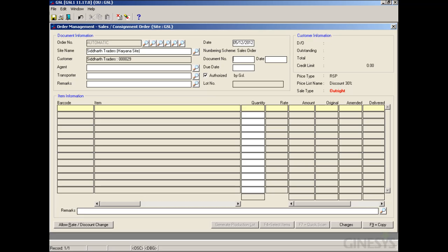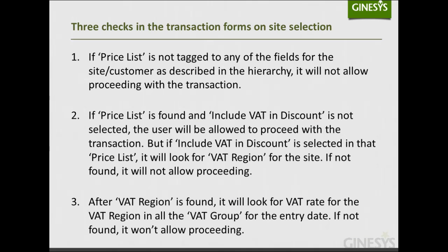Let's summarize the three checks performed in the transaction forms on site selection. First: if the price list is not tagged to any field for the site or customer as per the hierarchy, the system will not allow proceeding. Second: if a price list is found and 'Include VAT in Discount' is not selected, the user will be allowed to proceed. Third: if 'Include VAT in Discount' is selected, the system will look for the VAT region for the site — if not found, it will not allow proceeding.